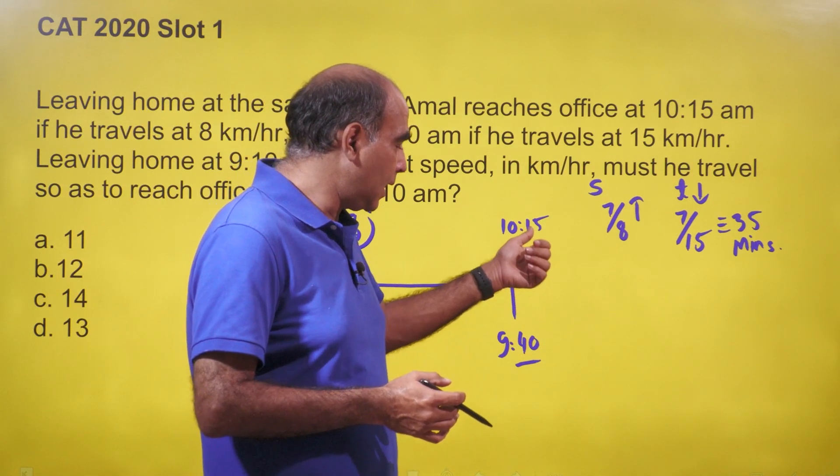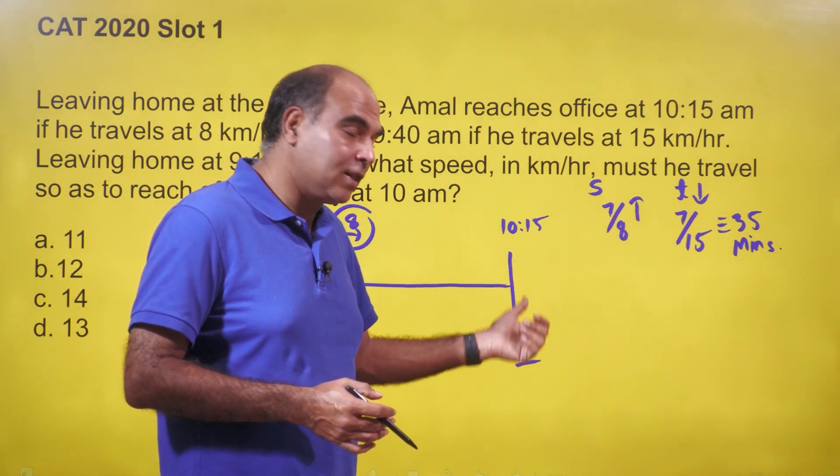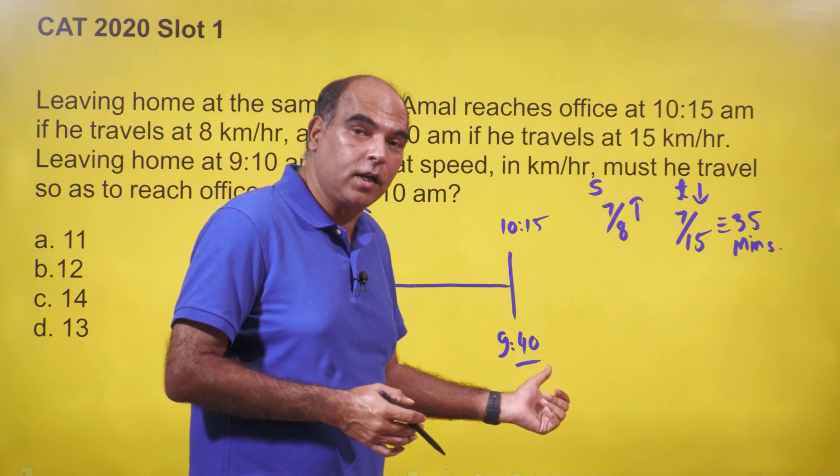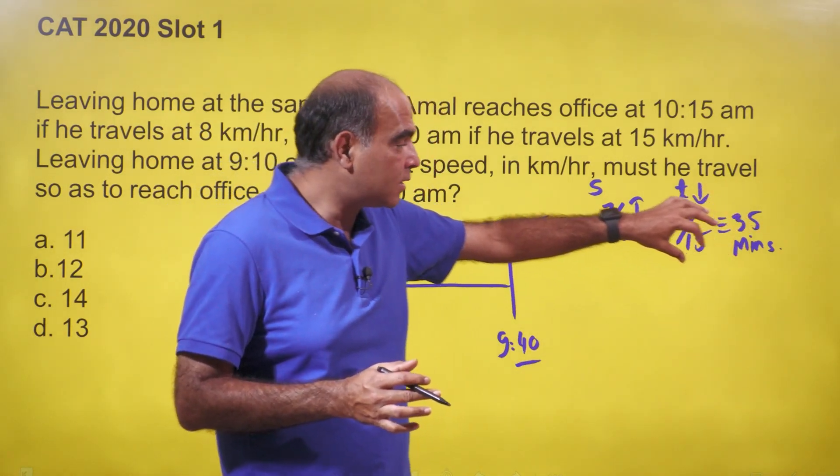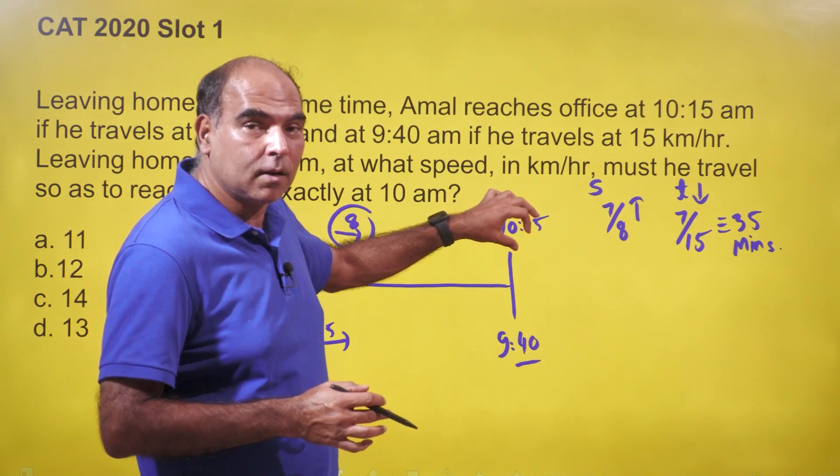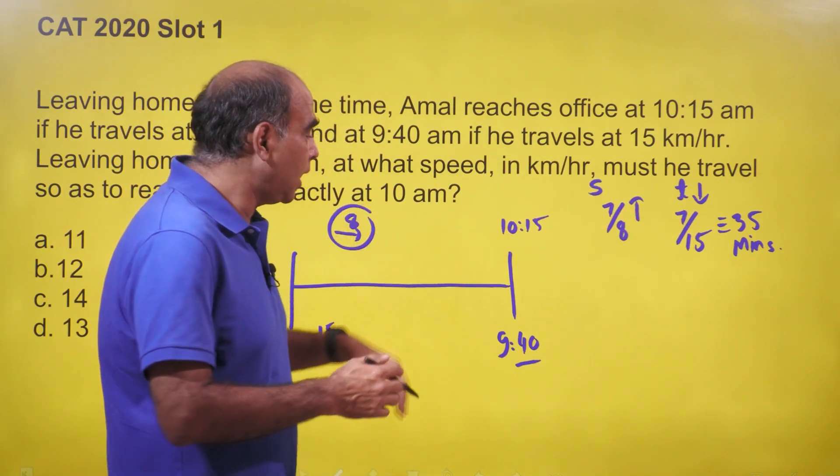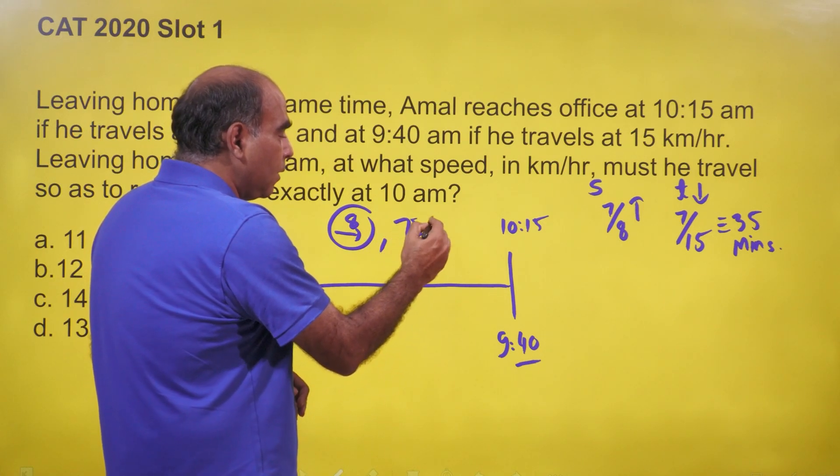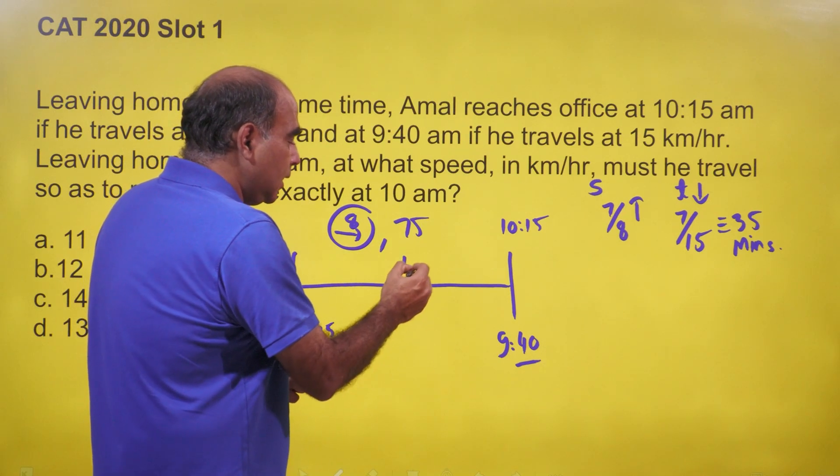Once you understand that and realize that the time—because they're starting at the same time—the time reduction is actually 35 minutes. He's reaching at 10:15, now reaching at 9:40, the time reduction is 35 minutes. 35 minutes represents 7/15 of this time. If 35 minutes is 7/15 of this journey time, this journey time must be 75 minutes or 1.25 hours.